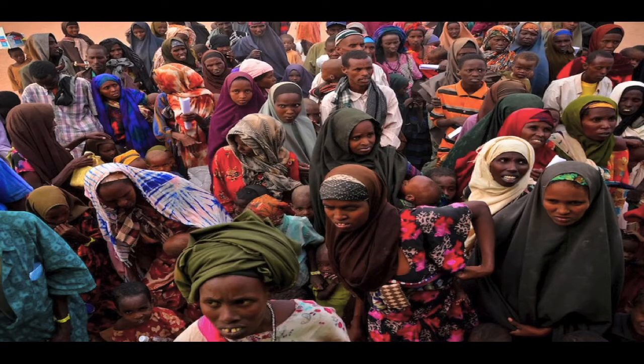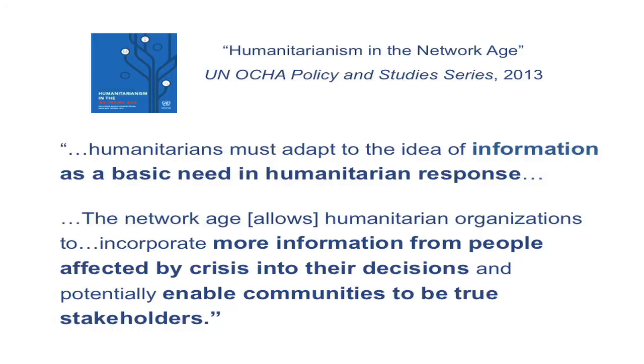At Internews, we believe that information saves lives, and as such, meeting the information needs of local communities is a critical component of effective and accountable humanitarian response. For an affected population, knowing the answers to questions such as: where can I find help? Should I go home? And where can I locate resources like food, water, medicine, and shelter? It is a growing recognition in the humanitarian community that information is a basic need in humanitarian response, and that we must work to greater incorporate information from affected communities into the decisions that we make.